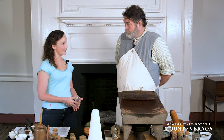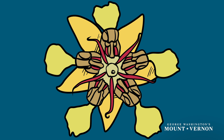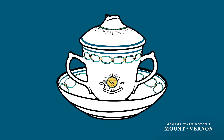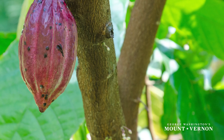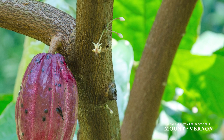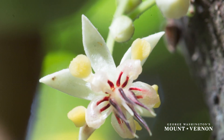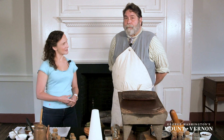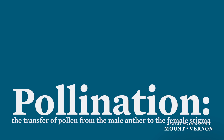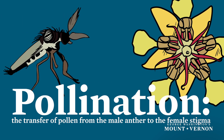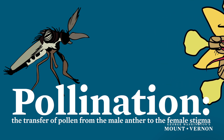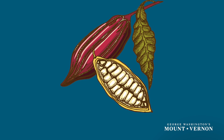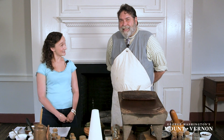Now I know that chocolate starts out as a plant, but how does it go from being part of a tree in Central and South America to a chocolate drink on the Washington's table? Chocolate begins as a tiny flower growing on the trunk of the cacao tree, and little insects called midgeflies pollinate these tiny flowers. Pollination occurs when insects or animals transfer pollen grains from the male anther of the flower to the female stigma. Once pollinated, these flowers will grow into pods. So without midgeflies, there would be no chocolate? Exactly.